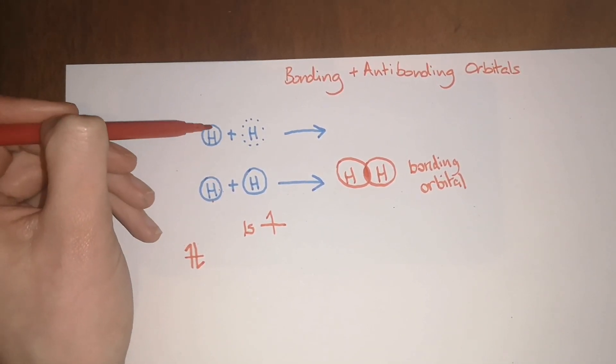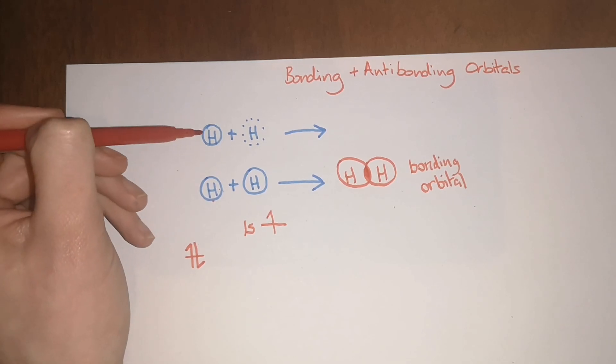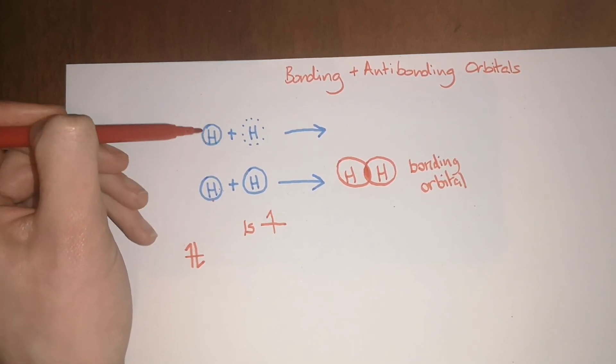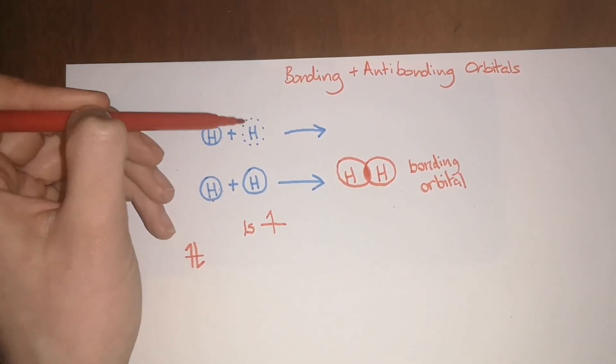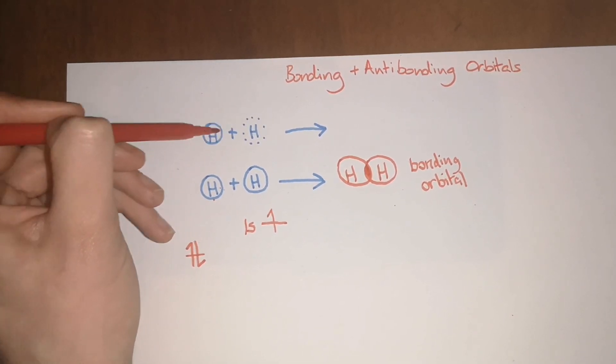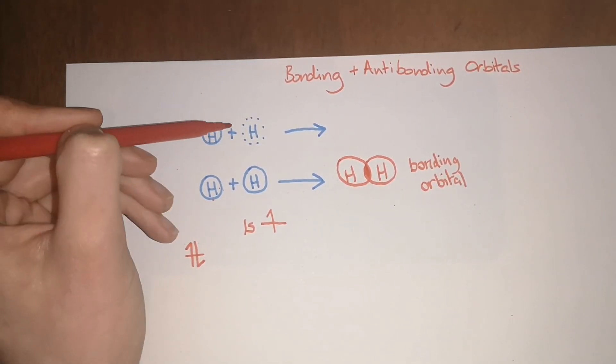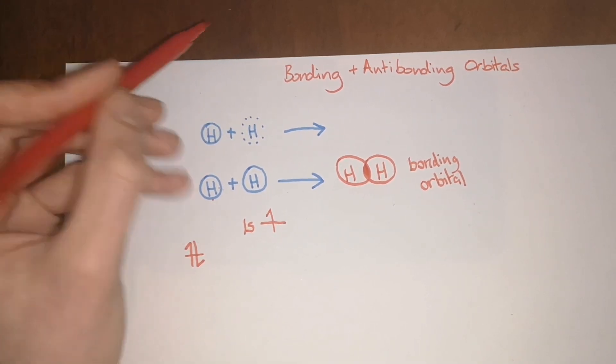If, for example, this hydrogen atom has a full line phase or a positive phase and this one has a negative phase or it's dashed, they cannot overlap each other. They have a destructive interference with each other.